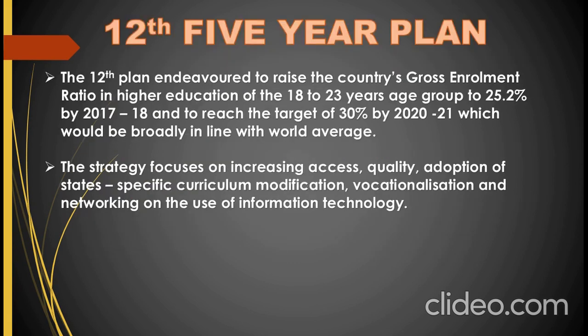We also discussed about the 12th Five-Year Plan. In this, we discussed about gross enrollment ratio — that this plan aimed to raise the country's GER in higher education to 25.2% by 2017-18 and to 30% by 2020-21. This plan also focuses on state-specific curriculum modification, vocationalization, and IT education. All these terms we have already discussed in our last class.